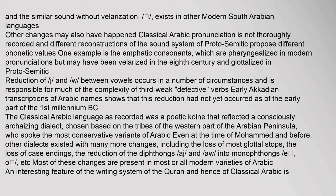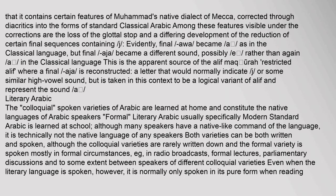An interesting feature of the writing system of the Quran and hence of Classical Arabic is that it contains certain features of Muhammad's native dialect of Mecca, corrected through diacritics into the forms of standard Classical Arabic. Among these features visible under the corrections are the loss of the glottal stop and a differing development of the reduction of certain final sequences. This is the apparent source of the Aleph-Maqsura — a letter that would normally indicate a high vowel sound, but is taken in this context to be a logical variant of Aleph and represent the sound 'a'.